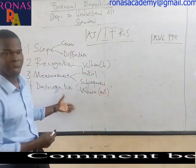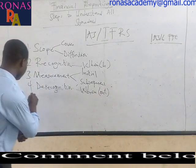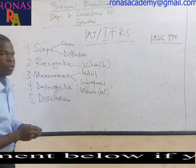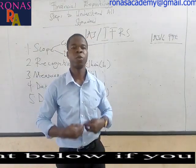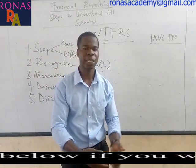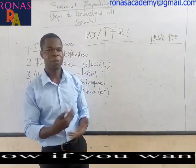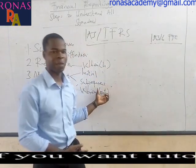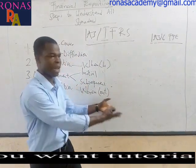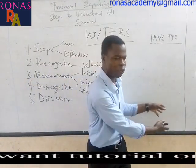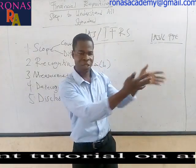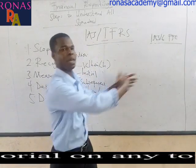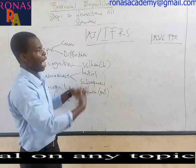The final step is disclosure. Disclosure is basically providing notes that give end users more information about that particular standard. For instance, if you used the cost model in your subsequent measurement, the note will explain how the cost model was applied and which depreciation method was used — such as the straight-line method — because those details won't appear on the face of the financial statement. Disclosure gives us more detail about what happened under that accounting standard.